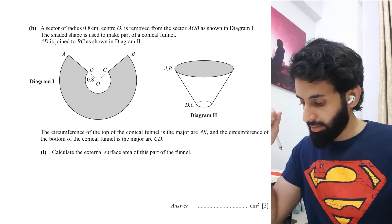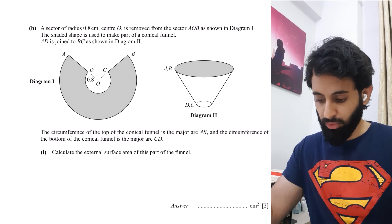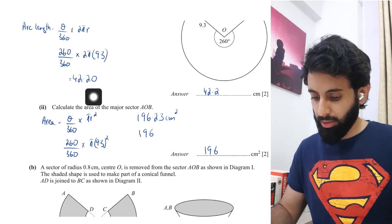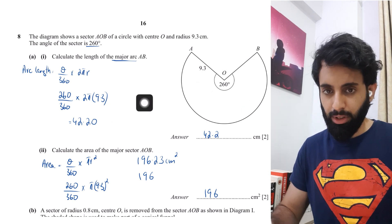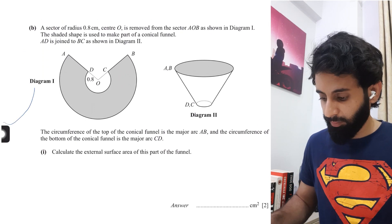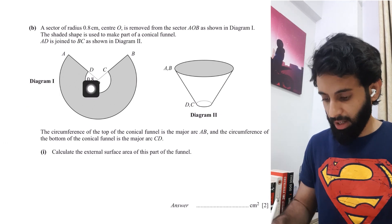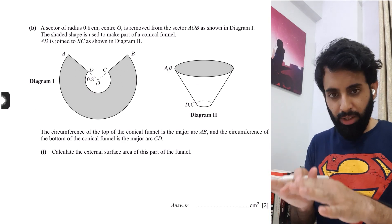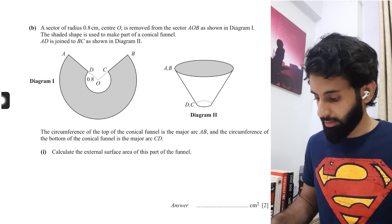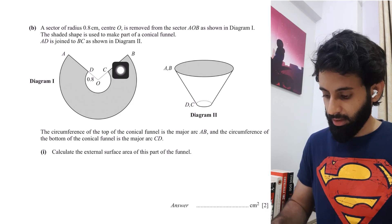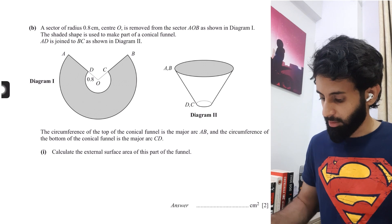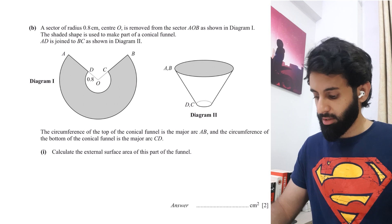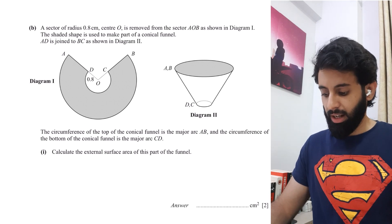Now for part (b), this is where it gets a bit tricky. A sector of radius 0.8 cm with centre O is removed from sector AOB, as shown in diagram 1. This same shape is then used to make part of a conical funnel — it has been folded so that AD is joined to BC, as shown in diagram 2. The major arc AB forms the circumference of the top of the funnel, and the major arc CD forms the circumference of the bottom.